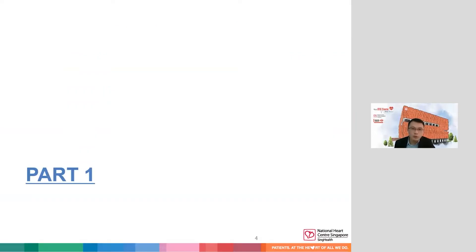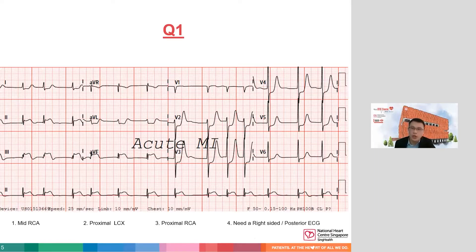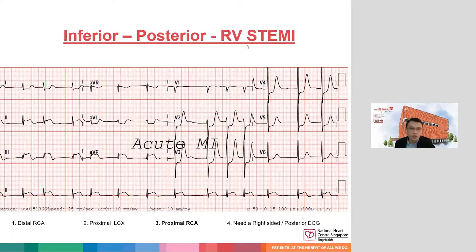I'm going to flash a quick ECG and ask you to provide a response. This patient's diagnosis is already given — the patient has an acute MI. The question is: what is the territory of infarct or the infarct artery? There's a good variety of answers. I'll walk you through the ECG. Personally, I think the answer is the proximal right coronary artery, and I'll share why.